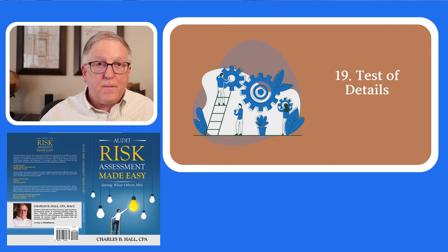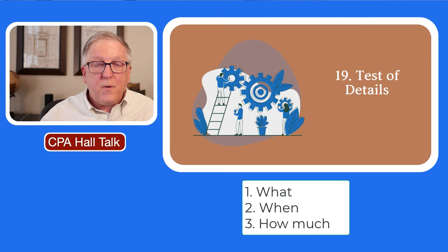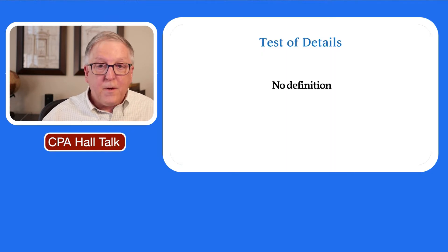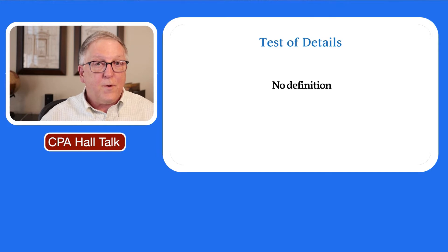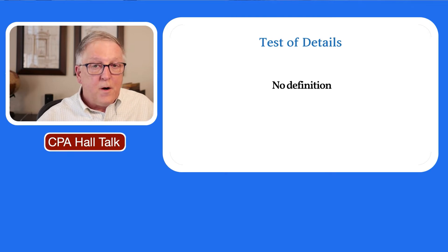In this chapter, I'm going to talk about the definition of test of details — what is a test of details? — and then we're going to look at the what, when, and how much questions I alluded to earlier. The audit standards don't really give us a definition, so I'm going to provide you with some examples of what a test of details might look like.